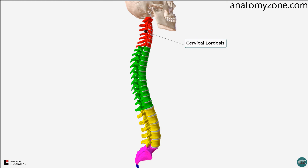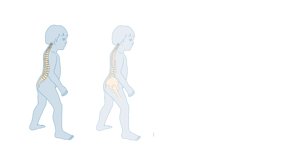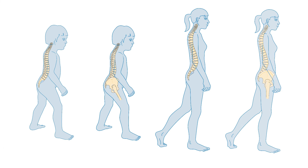The adult vertebral column is curved, with four curvatures. The cervical lordosis, which is convex anteriorly; the thoracic kyphosis, which is convex dorsally; the lumbar lordosis, which is convex anteriorly; and the pelvic curvature, which is concave anteriorly, starting at the lumbosacral junction and ending at the coccyx. In neonates, the vertebral column has one fixed kyphotic curvature, which is concave anteriorly, known as the primary curvature. The other lordotic curvatures are progressively developed later in life and are known as secondary curvatures.